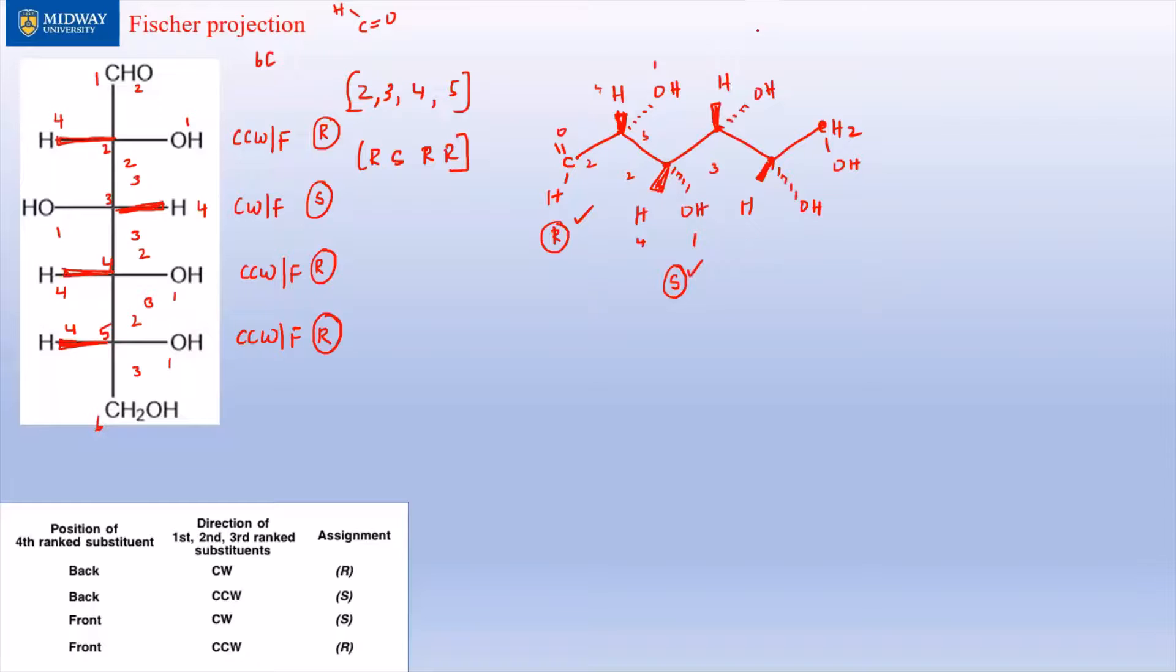We'll see - one, two, three, and four, so that's again counterclockwise and front, that's R. And for this one, finally, one, two, three, and four - that's clockwise and front and S. There we go, finally hit it - it's S, that's not what we want.